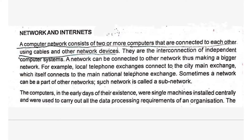A computer network consists of two or more computers that are connected to each other using cables and other network devices. They are the interconnection of independent computer systems. A network can be connected to other networks, thus making a big network.